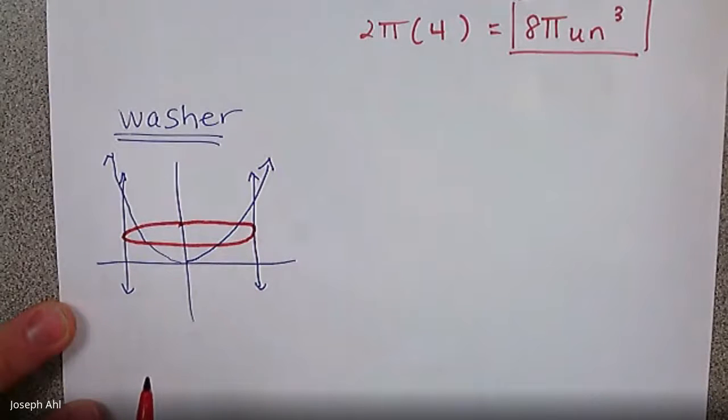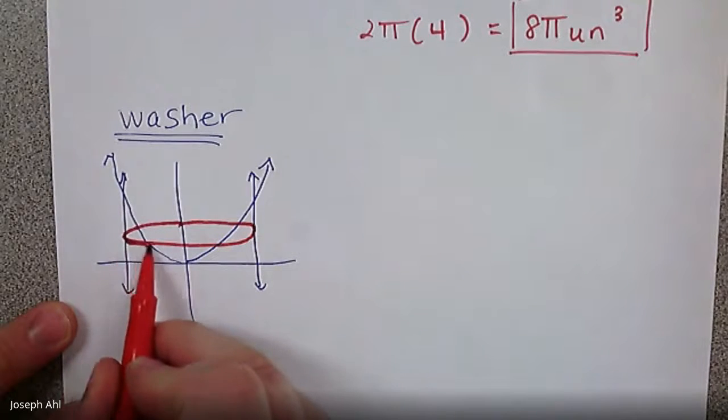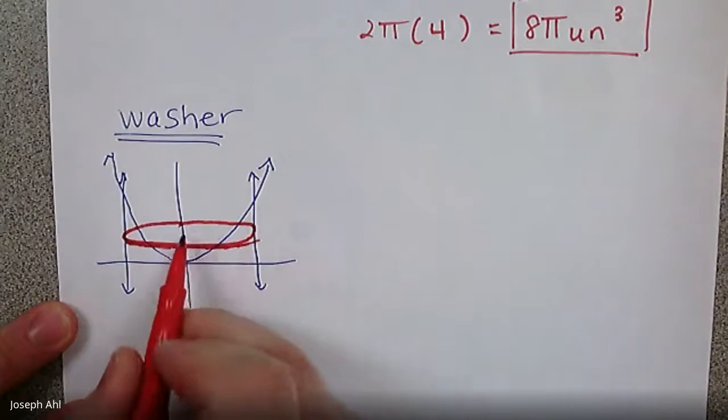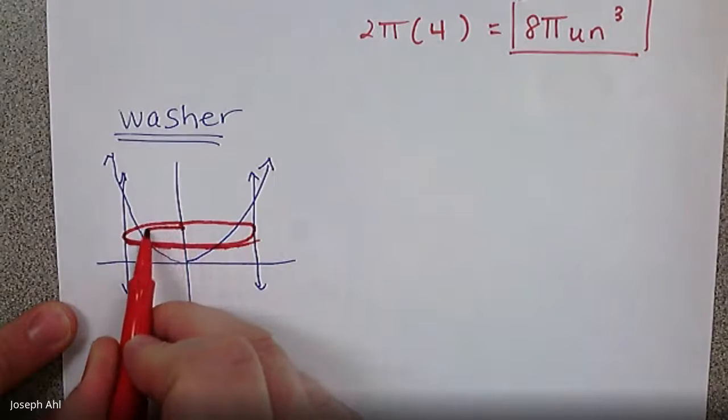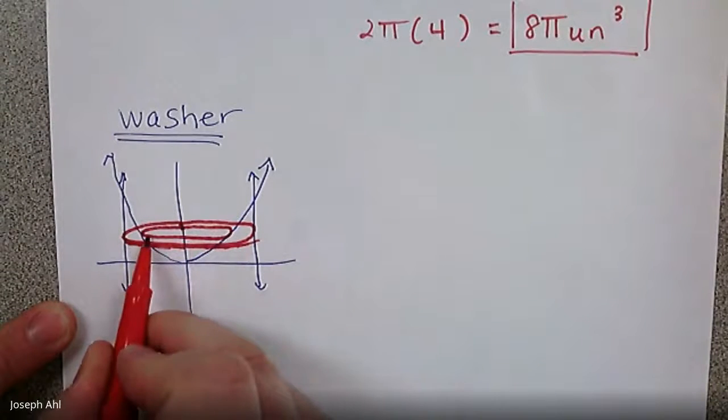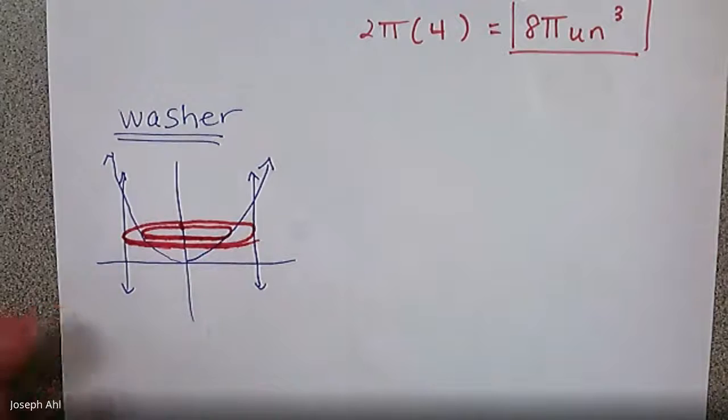So we get this right here, which is going to get your big radius. And then the smaller radius is going to be this empty part along the inside here. That's a pretty good washer. It's not bad at all.